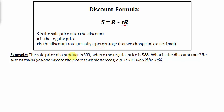In this example, the sale price of a product is $33, where the regular price is $88. What is the discount rate? Since this is a sale price of $33, it makes sense why it's less than the regular price of $88. So a product that was marked $88 discounted to $33, there's a pretty big discount, and we want to find the percentage in which it was discounted.